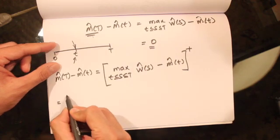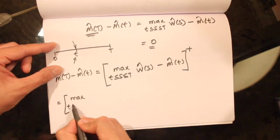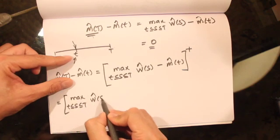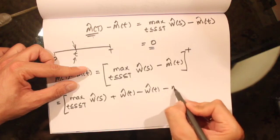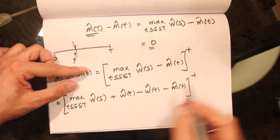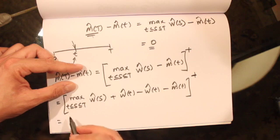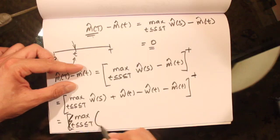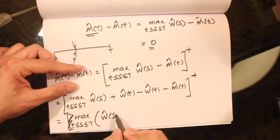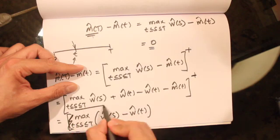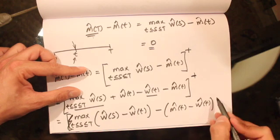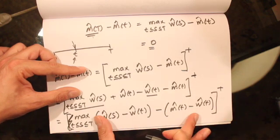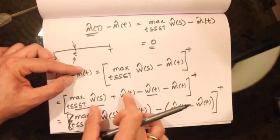Now we can do a little simplification. We write max_{t ≤ s ≤ T} ŵ(s), then add and subtract ŵ(t) minus m̂(t), and group these terms together. This gives us max_{t ≤ s ≤ T} (ŵ(s) minus ŵ(t)) minus (m̂(t) minus ŵ(t)), and we take the maximum of this expression or zero.